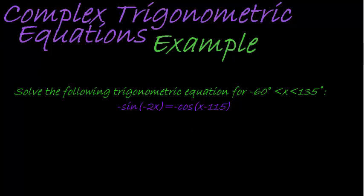So to change cosine into sine is actually extremely easy. All we do is add 90 to the inside, to the interior there. So we're going to keep this negative sine, negative 2x is equal to negative. And this one changes now into sine. And instead of having x minus 115 degrees, we're going to have x minus 115 degrees plus another 90 degrees.